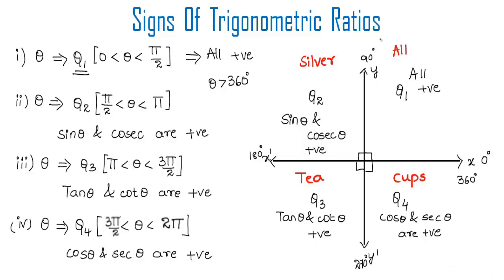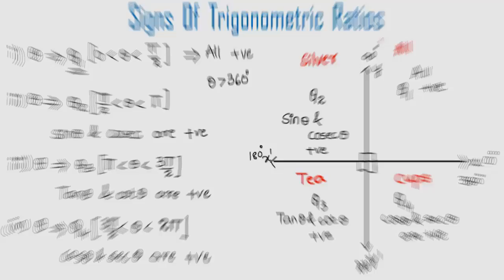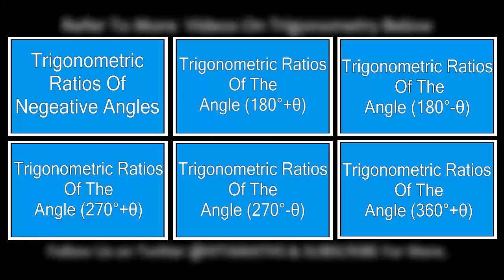So 'All Silver Tea Cups' is the simpler way to remember the signs of trigonometric ratios in respective quadrants. Hope you understood the concept — do like and subscribe to vteachacademy.com. Thanks for watching, have a nice day!